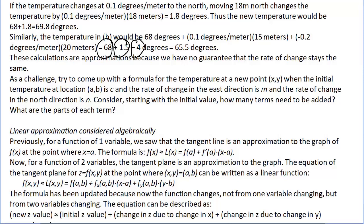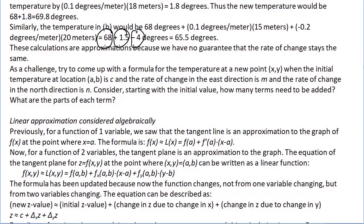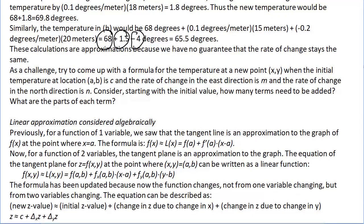We can name each of the three terms: the initial value we call c (or z sub zero); the change in z due to change in x we call delta sub x of z; and the change in z due to change in y we call delta sub y of z. Together they give us our new z value.